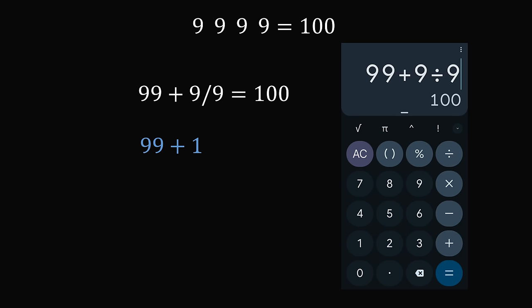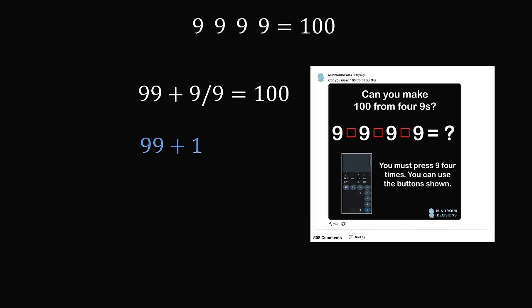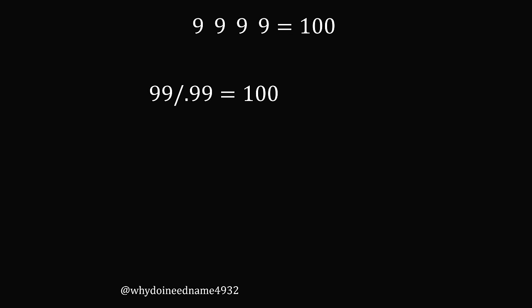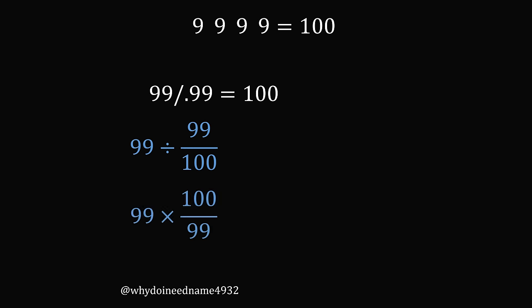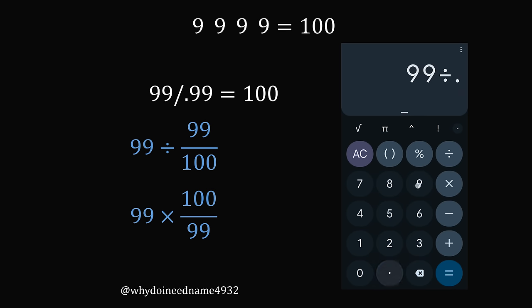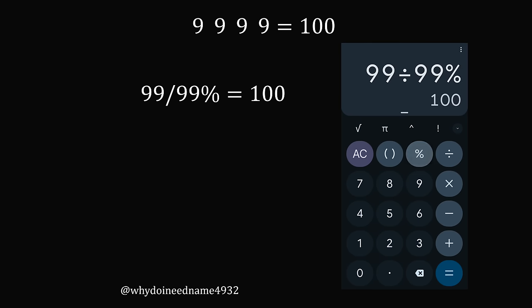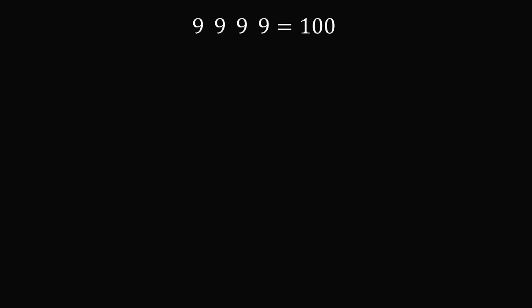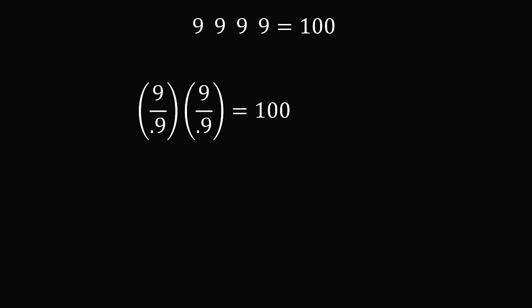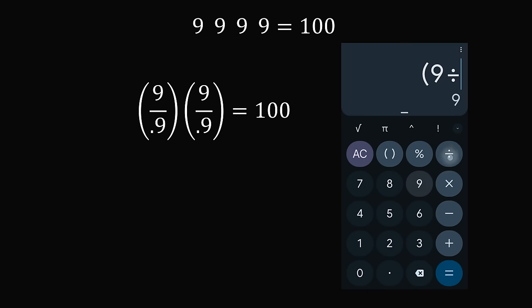There must be other ways, so I posted this on the YouTube community tab and got over 500 comments. Here's one: 99 divided by .99 equals 100. This is because dividing by .99 is the same as dividing by 99/100, which equals 99 multiplied by 100/99 — the 99s cancel, giving 100. A similar idea: 99 divided by 99% also equals 100. Next: 9 divided by .9 multiplied by 9 divided by .9 equals 100, since 9 divided by .9 equals 10, and 10 times 10 equals 100.